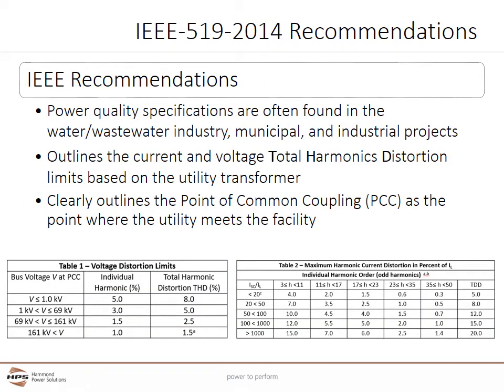IEEE 519 is recognized as the American national standard and is widely used in North America, especially in municipal public works markets. This standard details the recommended practices and requirements regarding harmonic control in electrical power systems. It outlines the current and voltage total harmonic distortion, or THD, that are recommended based on the input transformer's characteristics and the loads in a customer's facility. The current THD limits set by IEEE are clearly outlined in the tables. The point of common coupling is defined as the point of connection between the utility and the customer. IEEE 519 limits systems at less than 1,000 volts to 5% total harmonic distortion of the current.